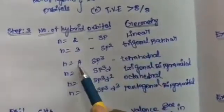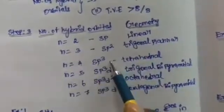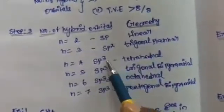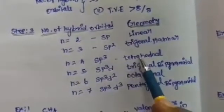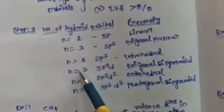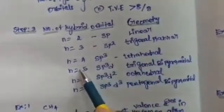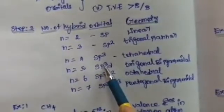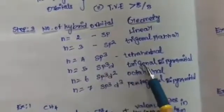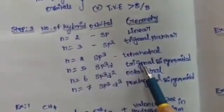When n equals 4, hybridization is sp3 and geometry is tetrahedral. When n equals 5, hybridization is sp3d and geometry is trigonal bipyramidal.